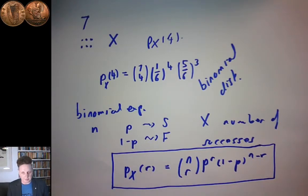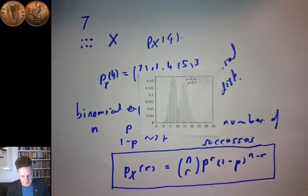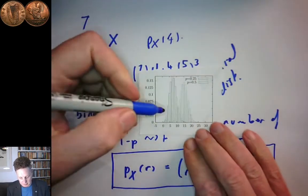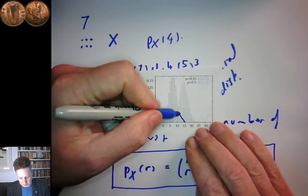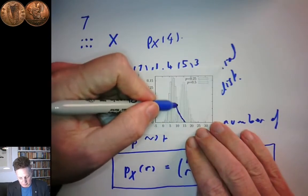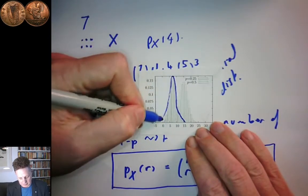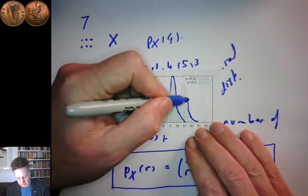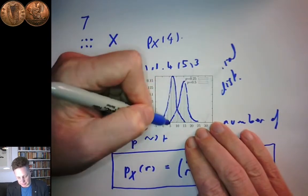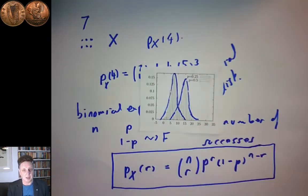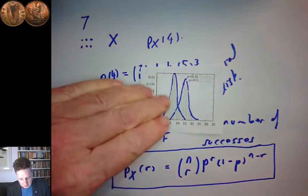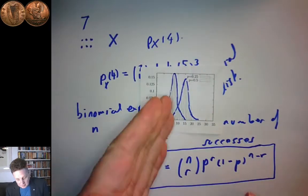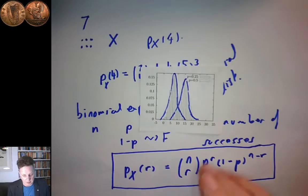I have a little graph of it here for two different cases — it's hard to see, but you can see it in your notes. This case here is with p equals a quarter — you can see it's kind of slightly slanted. And this is for p equals a half. Those are two examples of what the distribution looks like. But it's a discrete distribution — these aren't continuous smooth curves, these are histograms.